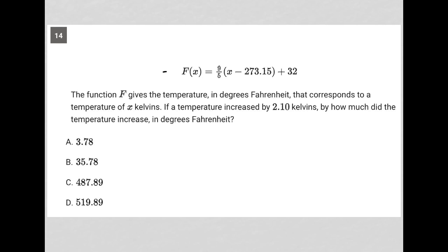This question says f of x is equal to 9 fifths times x minus 273.15 plus 32. The function f gives the temperature in degrees Fahrenheit that corresponds to a temperature of x Kelvins.